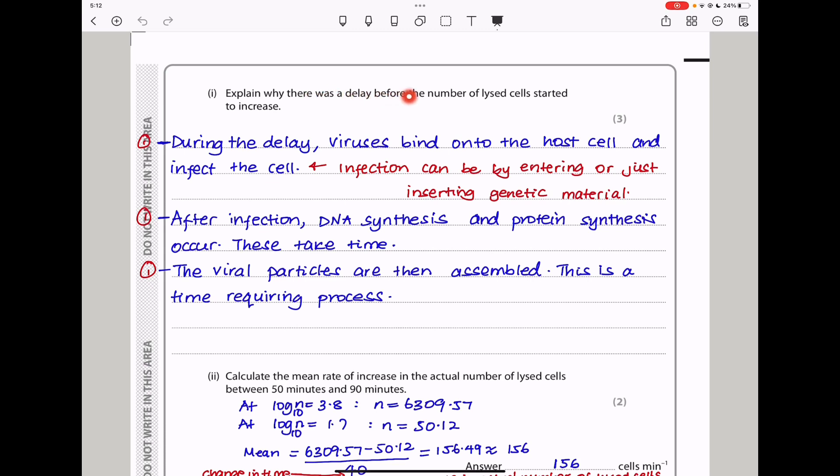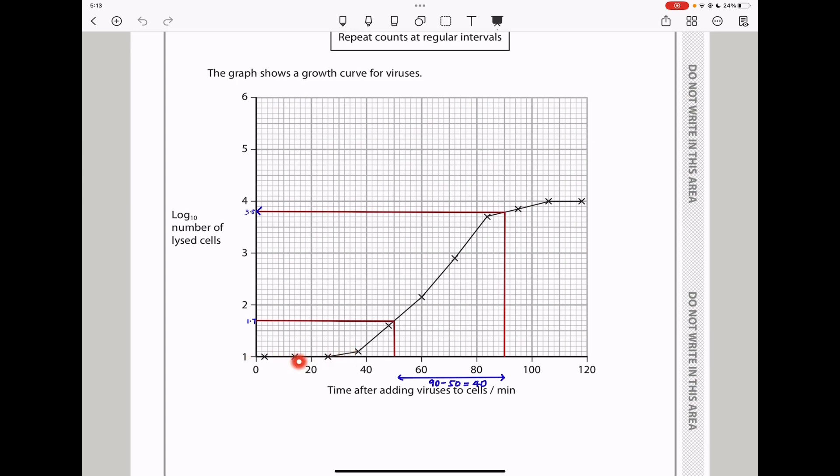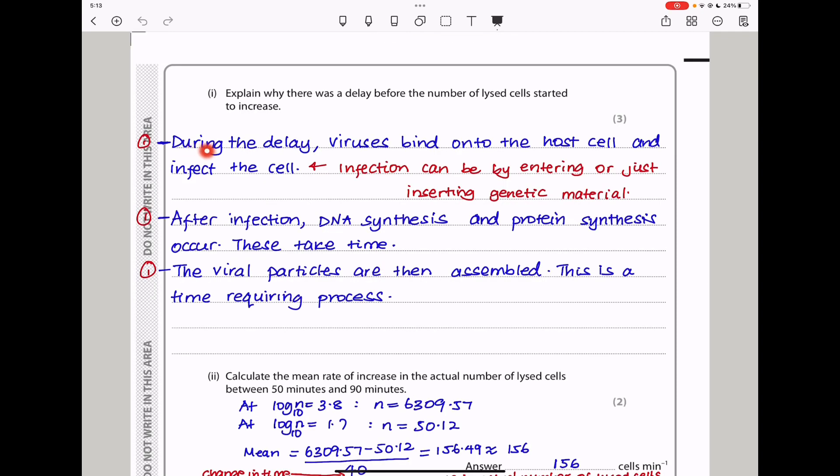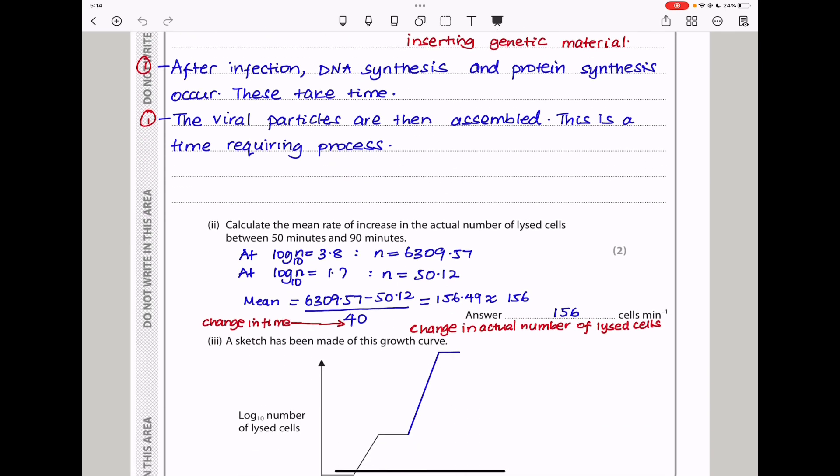Next they say explain why there was a delay before the number of lysed cells started increasing. This delay is because the viruses are still infecting cells. When they infect cells, they need time to produce enough proteins as well as genetic material that are going to be used for the packaging of the new viruses. During the delay, viruses bind onto the host cell and infect the cell. After infection, DNA synthesis and protein synthesis occur, and this takes some time. The viral particles are then assembled, and this is also a time requiring process.